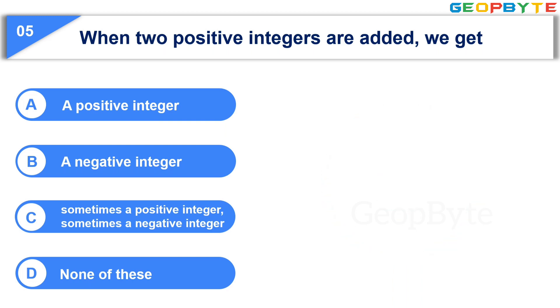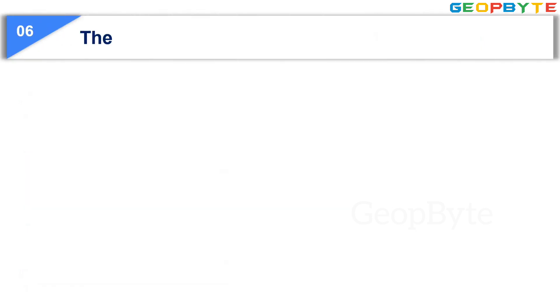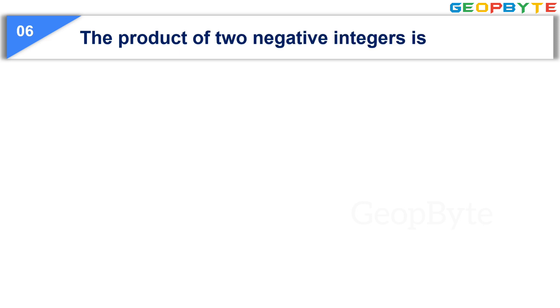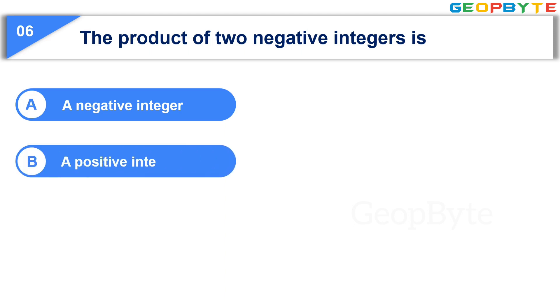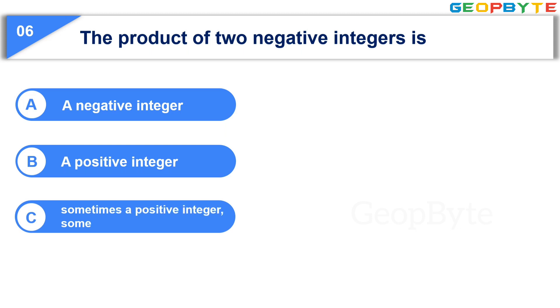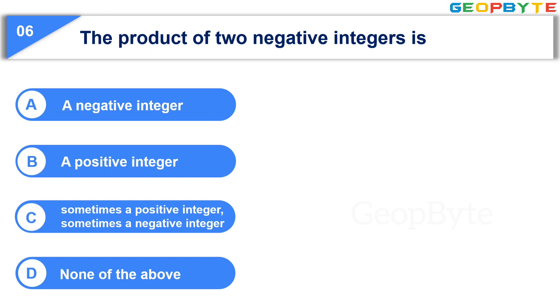Your time is up and the correct answer is Option A: a positive integer. The next question is: The product of two negative integers is — Option A: a negative integer, Option B: a positive integer, Option C: sometimes a positive integer, sometimes a negative integer, Option D: none of the above. Your time starts now.